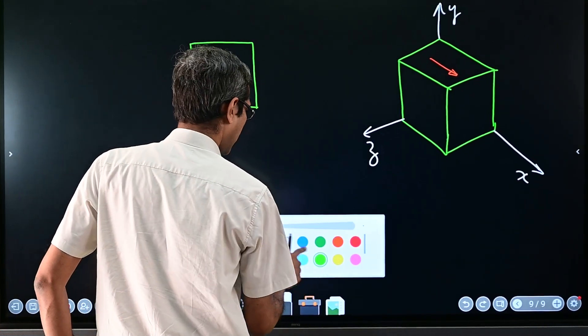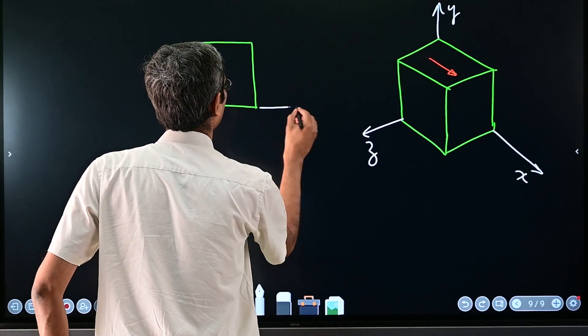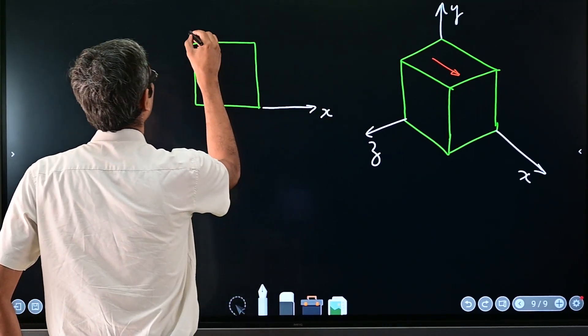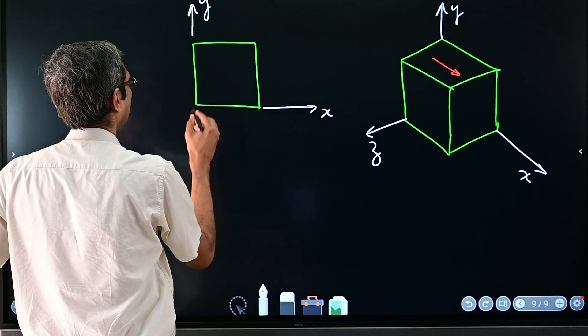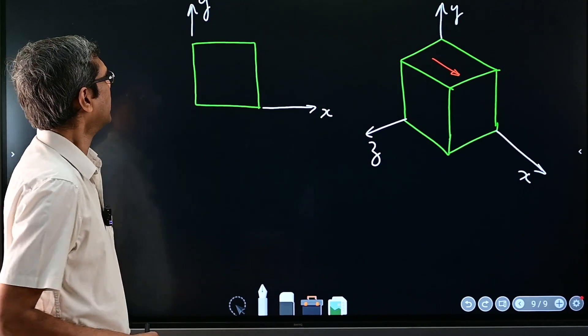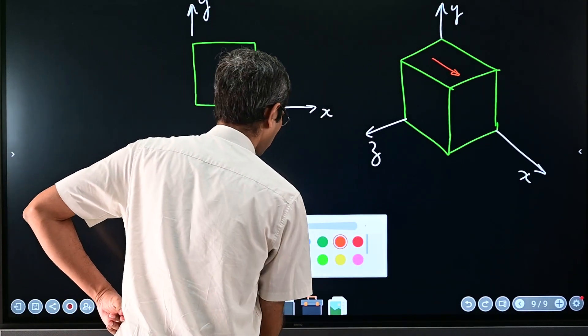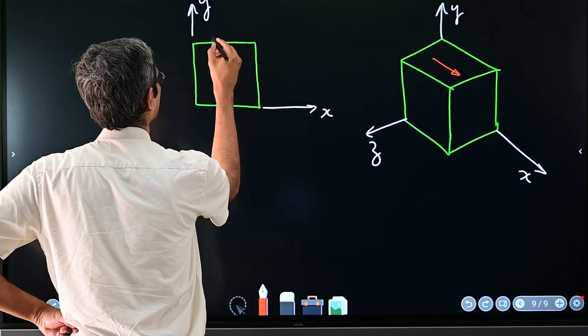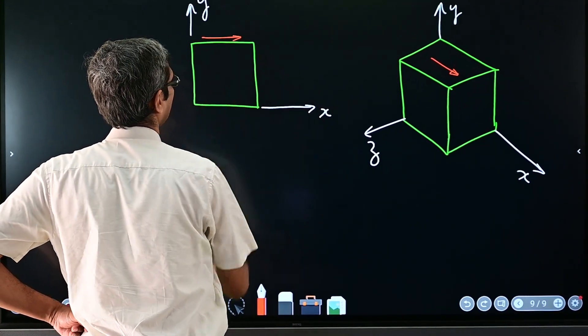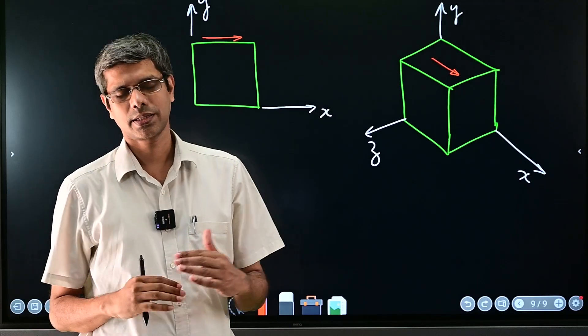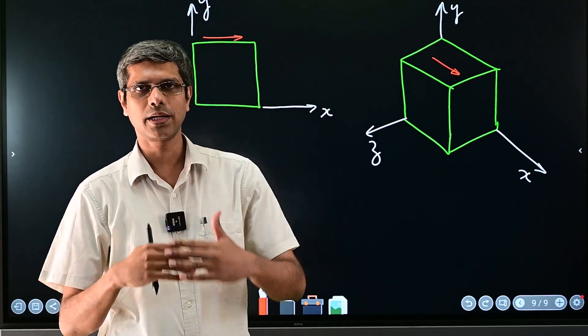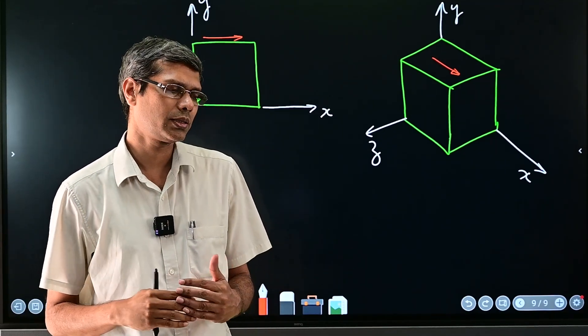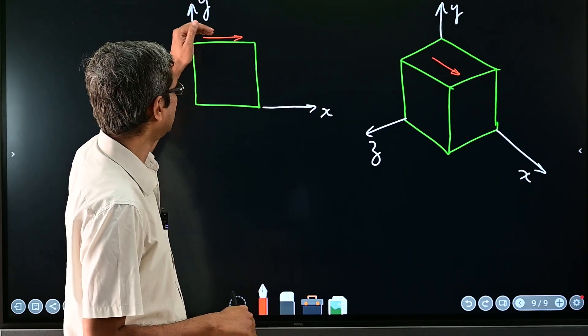Your x axis, y and z is coming out. Your force is acting like this. Now we had discussed that when force is parallel to a plane the stress which develops there is the shear stress.